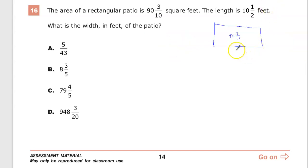The length is 10 and 1 half feet. So I need to figure out what goes here. I'm trying to find the width. The area of this is length times width. I already have this part. I need to figure out a way to determine, if I multiply, what do I need to multiply 10 and 1 half by to get 90 and 3 tenths? And there's a few ways that you'd go about doing it.